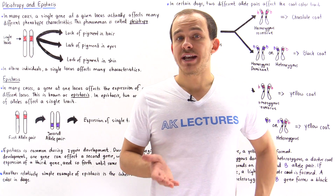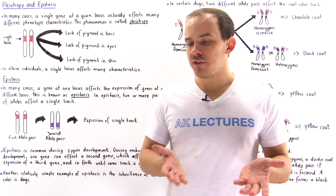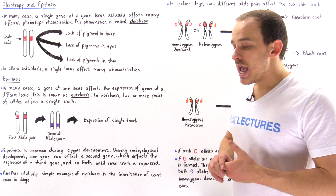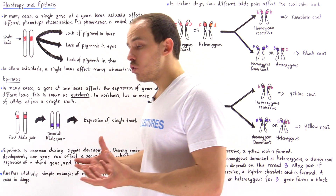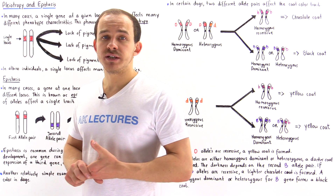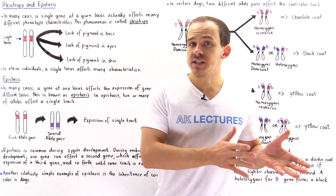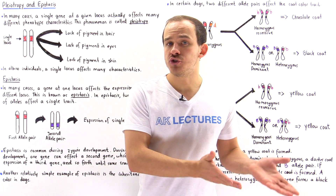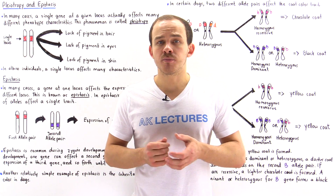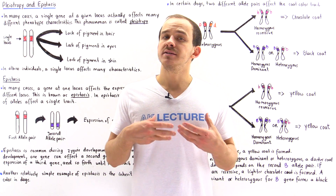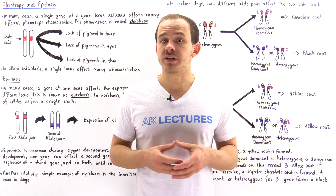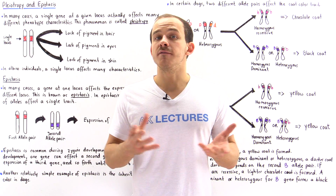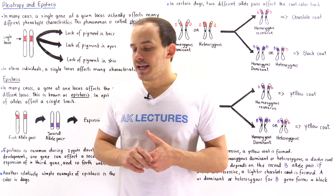From genetics we know that a gene is nothing more than the sequence of nucleotides found on our DNA. These genes basically code for specific types of proteins. And once the proteins are produced, the proteins can either interact with other genes, or the proteins can be used to produce some type of trait — to express some type of phenotype characteristics of the adult individual.